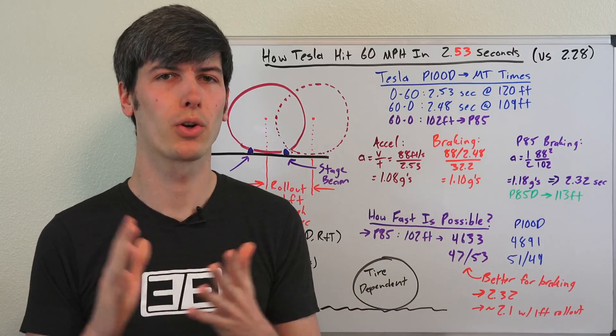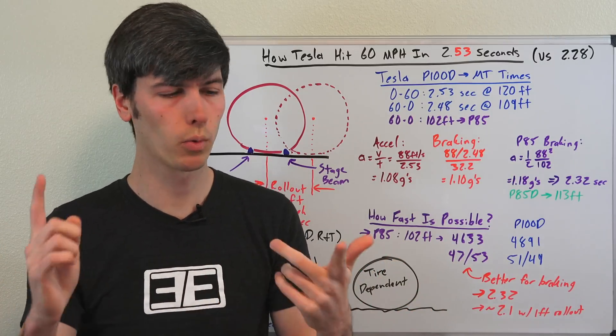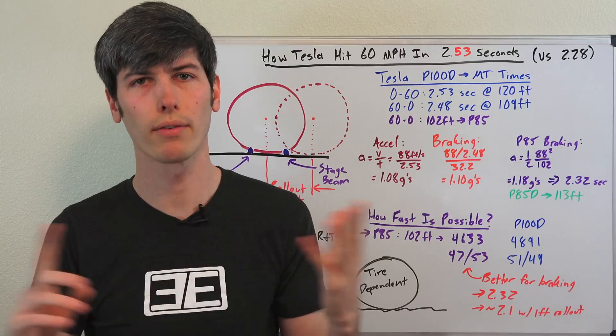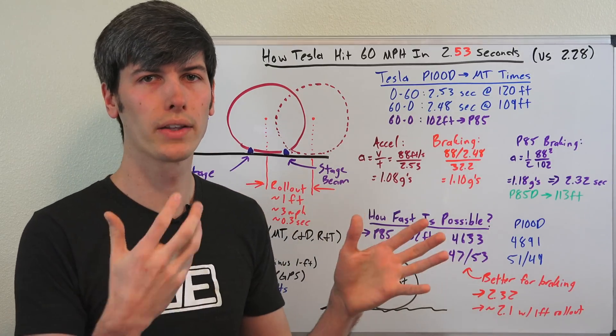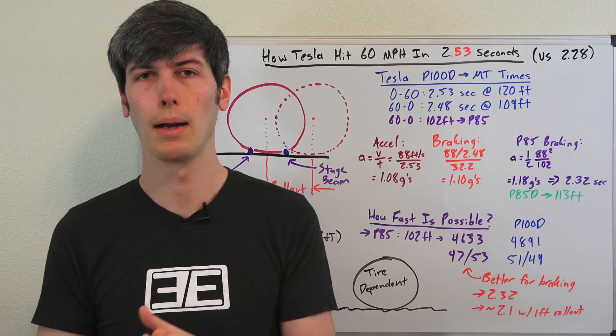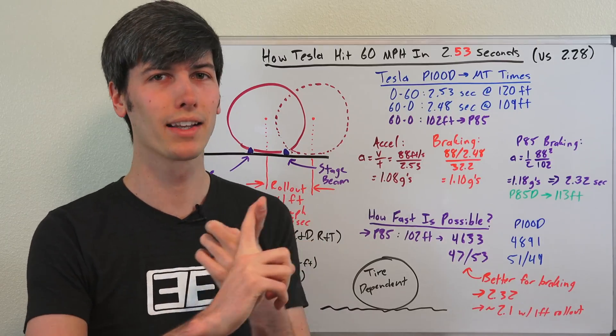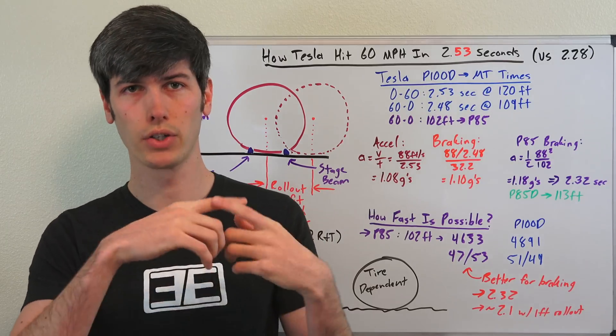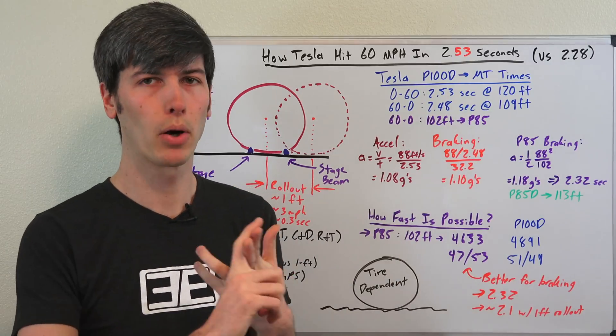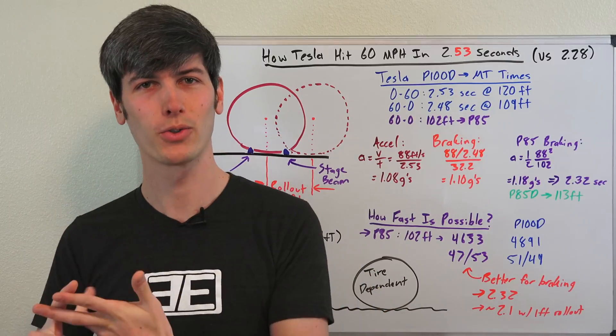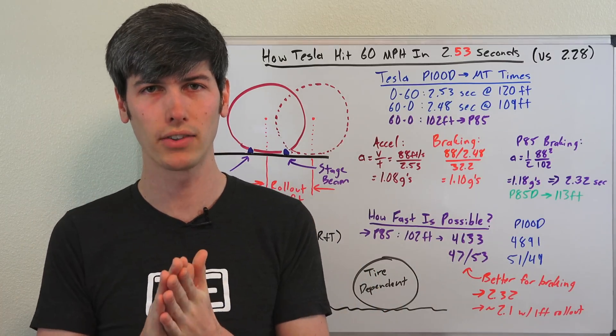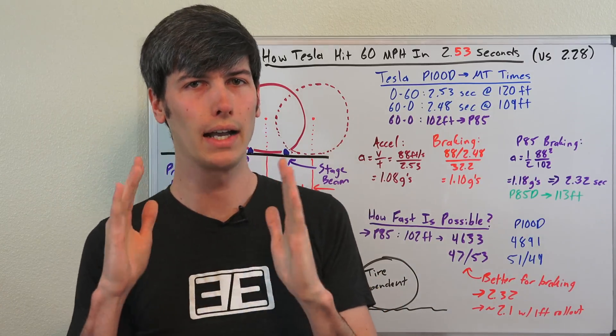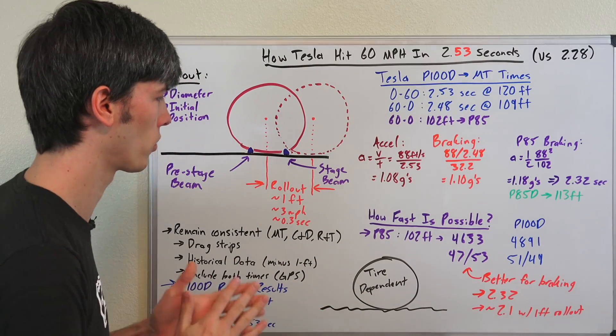So the reason why all of the major auto journalists are going to use this whether it's Motor Trend, Road and Track, Car and Driver, they're all going to be using this one foot of rollout and excluding that from their 0 to 60 time partly to remain consistent with the NHRA, which is basically the top tier of drag racing out there, partly because if you take your car to a drag strip, that's the number that you're going to be able to get so you can measure it directly with the car magazine.